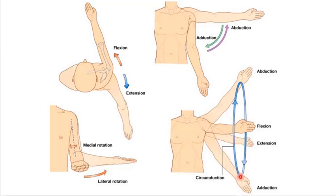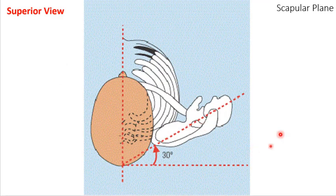A lot of textbooks have circumduction for the hip and for the arm — it just shows that you can move in this conical type movement, a combination of all the movements. It's a third-degree joint, a ball-and-socket joint.